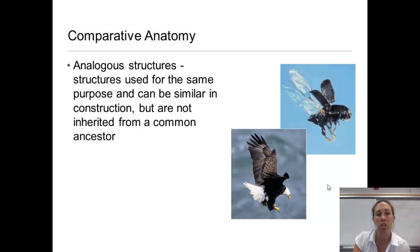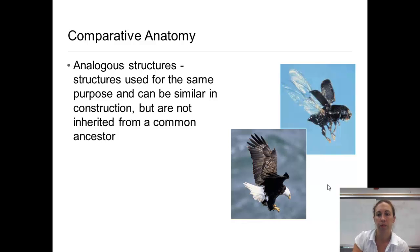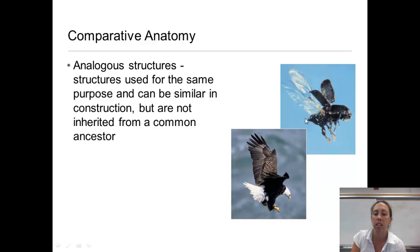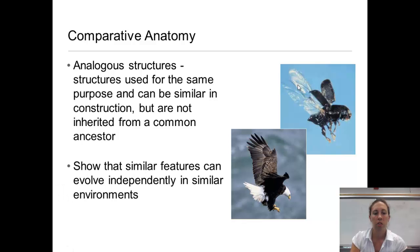Analogous structures are structures used for the same purpose and can be similar in construction, but they are not inherited from a common ancestor. For example, a fly has wings and a bird has wings, but a fly is an insect and an eagle is a bird — they do not share a common ancestor. They both evolved separately but have similar wing structure, showing that similar features can evolve independently in similar environments.